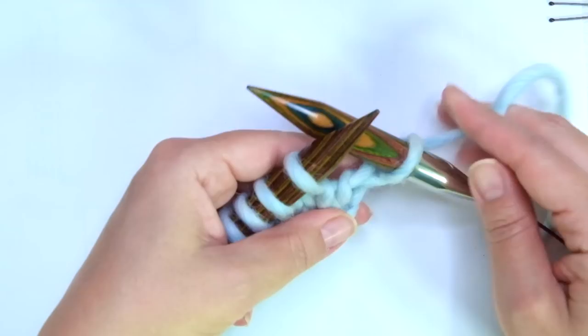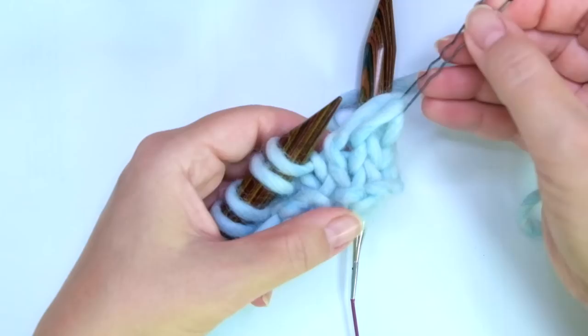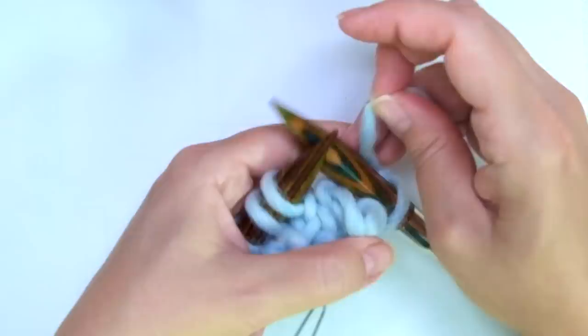Third row, right side of the work. We start with knit one, the edge stitch. And now comes the repeat. Slip the next 2 stitches onto your cable needle and place them at the front of the work.